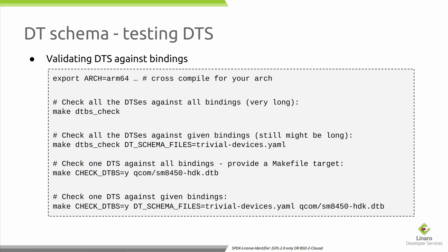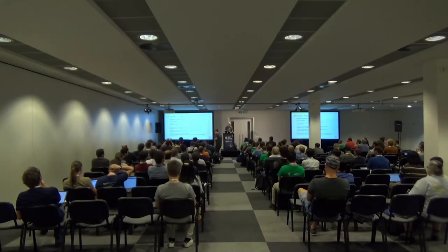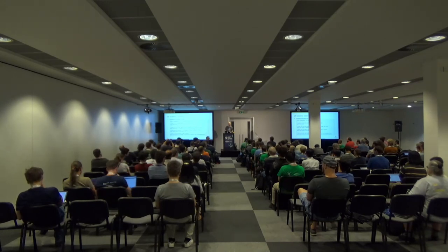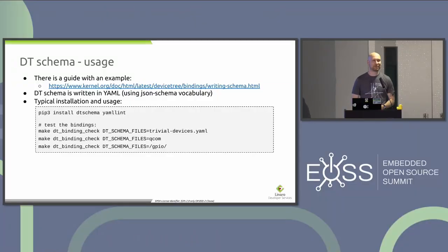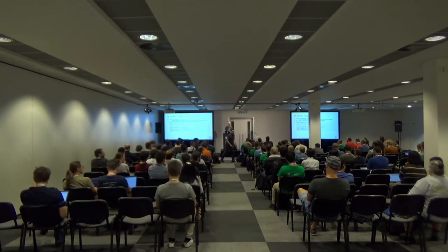Question from the audience: can you validate an external DTB compiled outside the kernel tree? Yes — there's a dt-validate tool that comes from the dt-schema package. If you install the package, you should have the appropriate command. It takes a path to a DTB wherever it is. I've only worked on upstream so I haven't personally tried it, but it should work. The answer is yes — you can validate an external DTB.